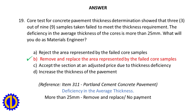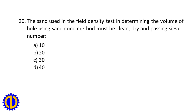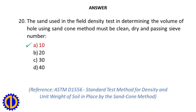No payment. Question 20. The sand used in the field density test in determining the volume of hole using sand cone method must be clean, dry, and passing sieve number: A. 10. B. 20. C. 30. D. 40. Answer: A. 10. Reference: ASTM D1556, Standard Test Method for Density and Unit Weight of Soil in Place by the Sand Cone Method.